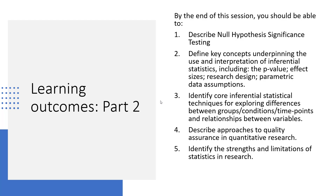Looking at the learning outcomes for Part 2: by the end of this session you should be able to describe null hypothesis significance testing, define key concepts including the p-value, effect sizes, and research design, and identify the parametric data assumptions. You should also be able to identify core inferential statistical techniques for exploring differences between groups, conditions, or time points, and for exploring relationships between variables. Finally, you should be able to describe approaches to quality assurance in quantitative research and articulate the strengths and limitations of statistics.